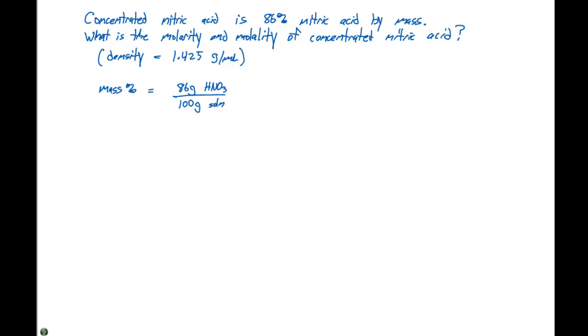If we look at this particular solution, we know that there's 86 grams per 100 grams. So this 100 grams of solution is 86 grams of HNO3 plus 14 grams of water. If we assume 100 grams solution, and I would suggest you always assume 100 grams of solution for percents, it makes everything much easier.